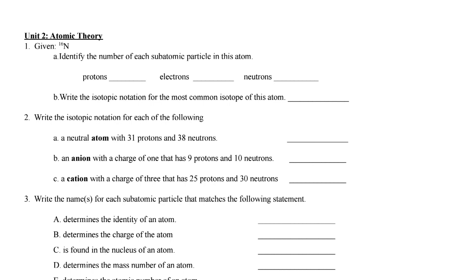Moving on to unit two atomic theory. So given 16 with this big N, identify the number of each subatomic particle. That N is the chemical symbol for nitrogen. We have to find nitrogen in our periodic table and see that it has seven protons. Now we don't see a charge, so it must be neutral. So it's got seven electrons to balance the seven protons. How many neutrons? Here we need to look at the mass number 16, and we can just do the 16 mass number minus our seven protons equals nine neutrons. Write the isotopic notation for the most common isotope of this atom. So 16 is not the most common isotope. If we look at the atomic mass and round it, we'll see that 14 is the most common. So this should be 14 nitrogen, or how we actually say that it's nitrogen-14.